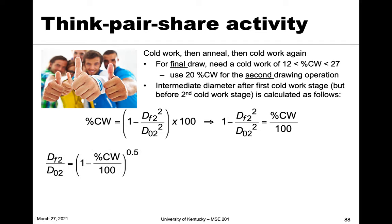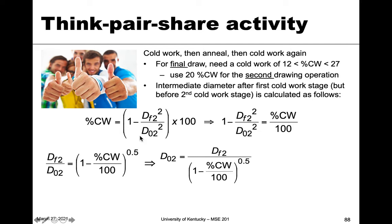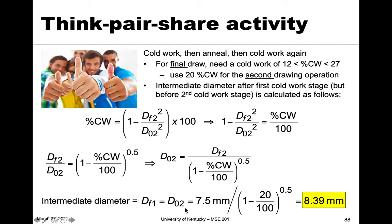To find the intermediate diameter, we use the cold work formula relating final and original (intermediate) diameters, with the pi and fours already cancelled. We know the final diameter is 7.5 millimeters and we're targeting 20 percent cold work for the final draw. Solving for the original (intermediate) diameter gives us 8.39 millimeters. Any cold work value between 12 and 27 percent would yield a valid intermediate diameter.